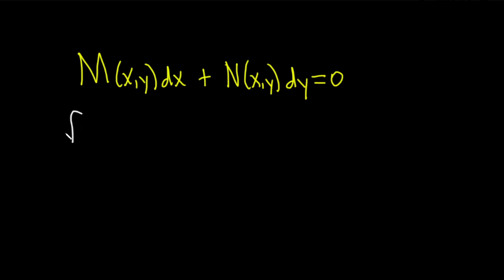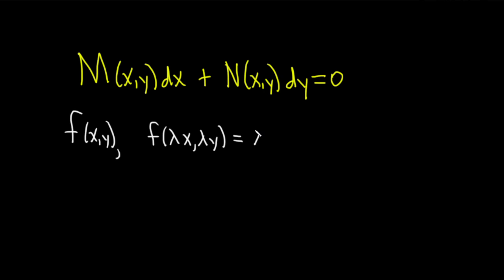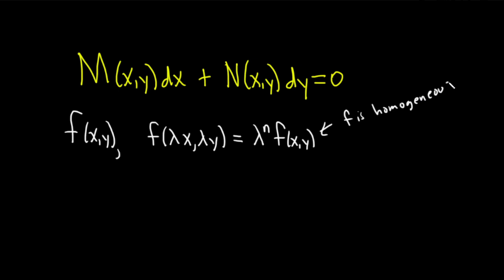So if you have a function f of x, y, and you look at f of λx, λy — if you plug in λx for x and λy for y and you end up with λⁿ times f of x, y, then we say this function is homogeneous of degree n.